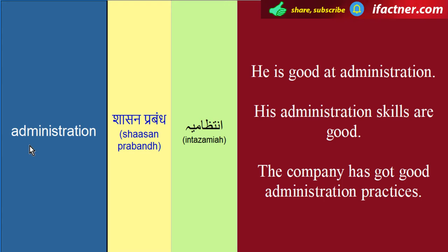Pahla word hai administration. Yeh word 'admin' se nikla hai. Administration ki spelling hai A-D-M-I-N-I-S-T-R-A-T-I-O-N — administration. Administration ka meaning hota hai shasan prabhand, yaani ke intizaamiaan.